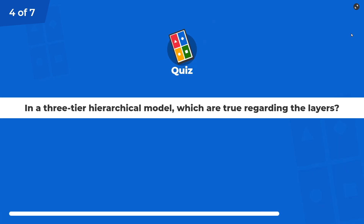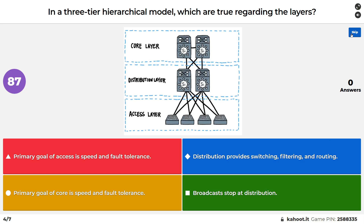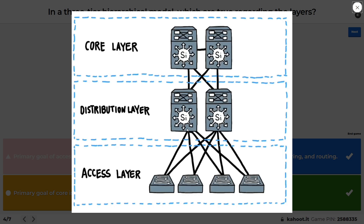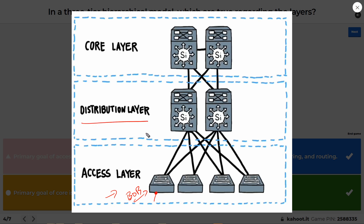This is multiple select. In a three-tier hierarchical model, which are true regarding the layers? One incorrect answer was that the primary goal of access is speed and fault tolerance. The access layer is where end users like Bob plug in — printers, users, etc. For Bob connected to one port, there's not a lot of fault tolerance there. If that port fails, Bob's out of luck. We do have some fault tolerance as the access device connects to two distribution layer devices, which are multi-layer switches.